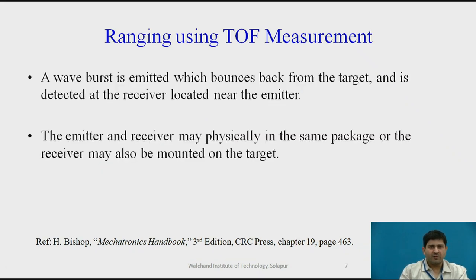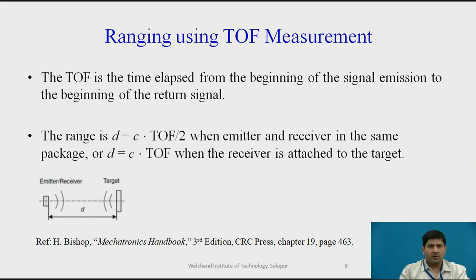Ranging using time of flight measurement involves a wave burst being emitted, which bounces back from the target and is detected at the receiver — often located at the emitter as well. The emitter and receiver may be physically the same package, or the receiver may be mounted on the target in certain cases. The time of flight is the time elapsed from the beginning of signal transmission to the beginning of the return signal. If d is the distance between the emitter and the target and c is the speed of light, then d = c × (t/2), where t is the time of flight. If the receiver is attached to the target, then d = c × t.